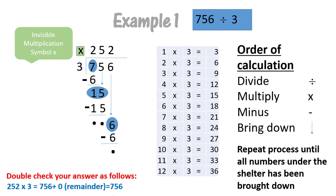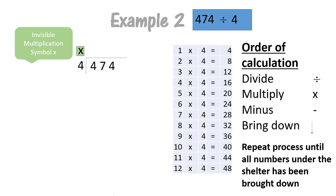Let's do another example. Example 2. In this example, we have to know our four timetables and remember our order of calculation. We have to determine how many times four goes into 474. So let's start. Four goes into four — how many times? Correct, once. And we multiply: one times four equals four. Then we have to subtract: four minus four equals zero.